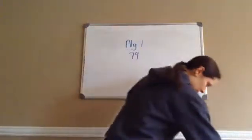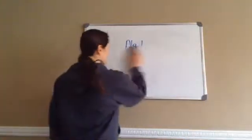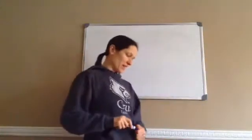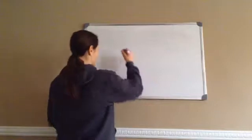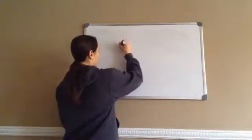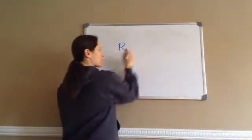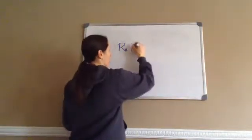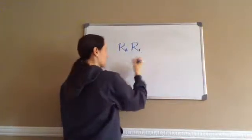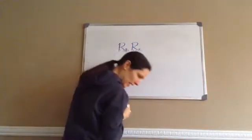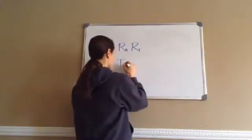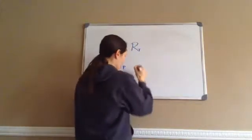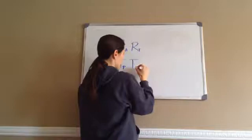Algebra 1, Lesson 79. This one is on systems of equations with subscripted variables. Basically, what you're going to see is things like R with a little subscript A, or R with a subscript T, and you're also going to see T with a subscript P, and then a T with a subscript R.